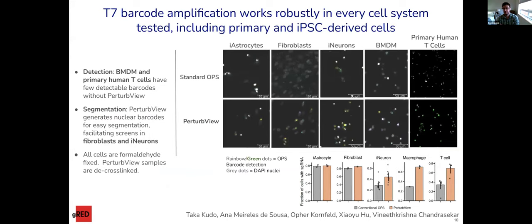This method works in every cell line tested. Comparing standard optical pooled screening versus PerturbView across astrocytes, fibroblasts, neurons, BMDMs, and primary human T cells: for astrocytes and fibroblasts, standard OPS works fine, but as we move to other cell types, efficiency takes a big hit. PerturbView gives uniformly around 70-80% efficiency. Moreover, with standard OPS, it's very hard to segment cells and assign guide RNAs, while PerturbView produces bright nuclear foci that are very easy to assign, making experiments much easier.